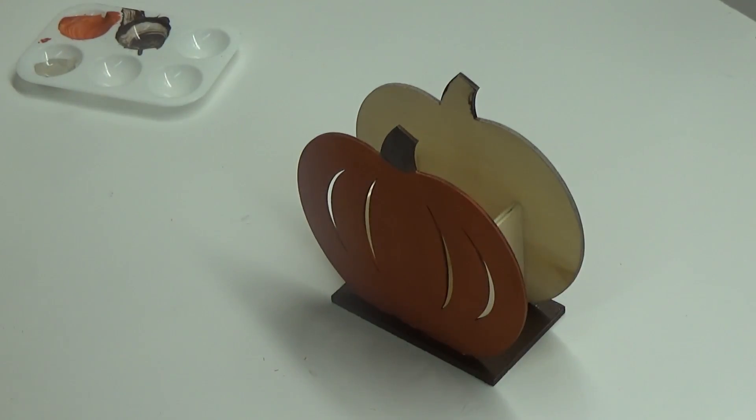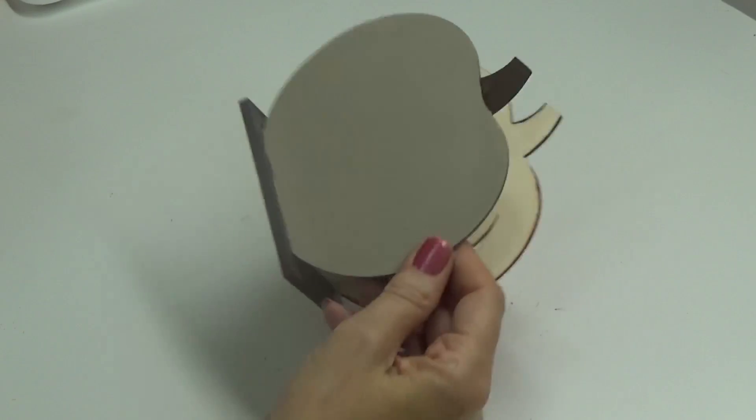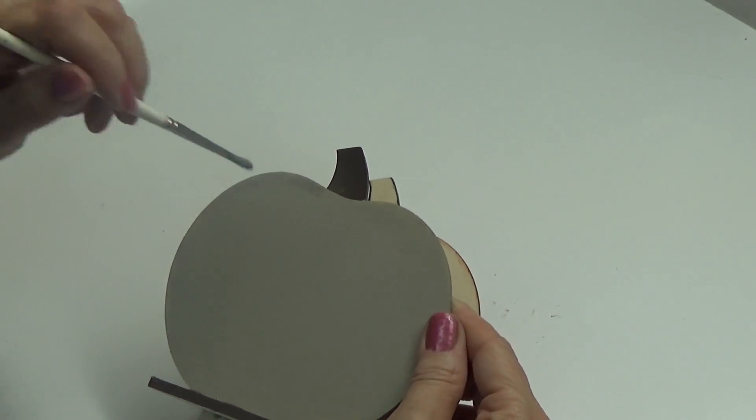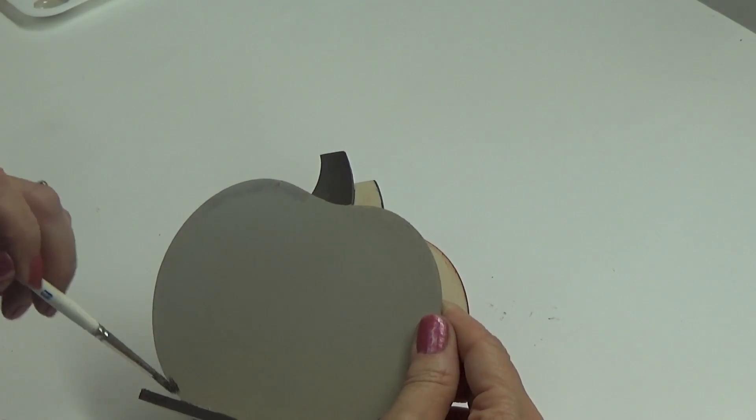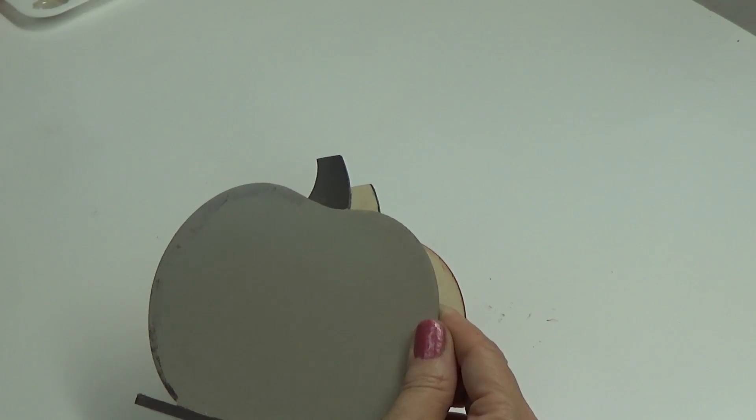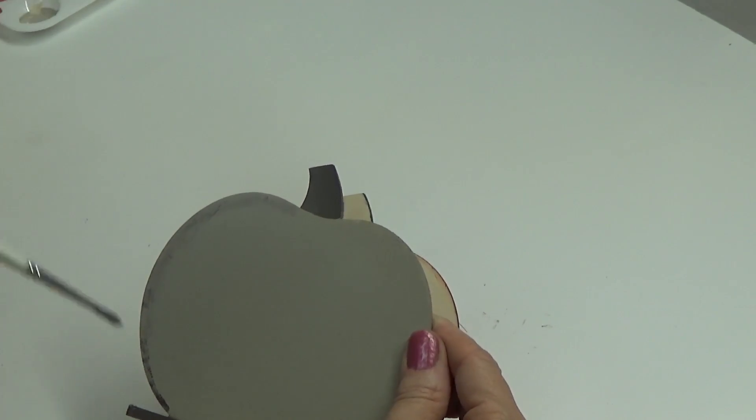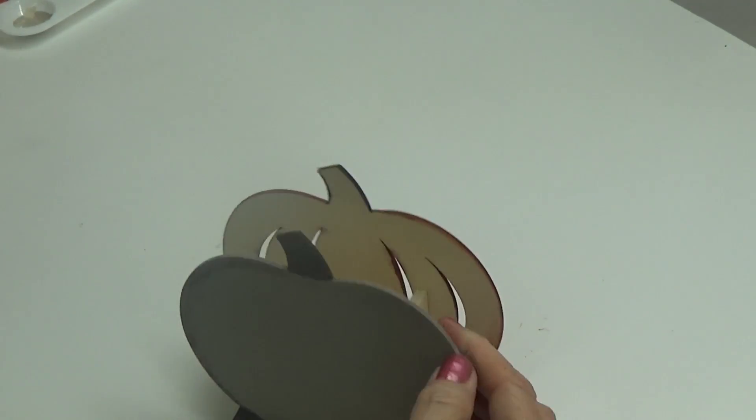Now I've let that dry and I'm going to put some detailing in. This is that same brown, just kind of dry brushed over the edge just for some detailing to make it a little more rustic looking, because I like stuff more rustic.